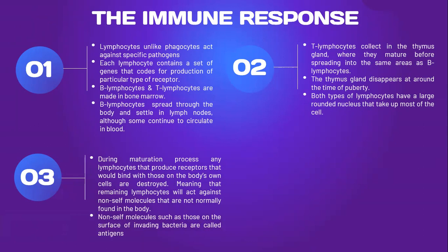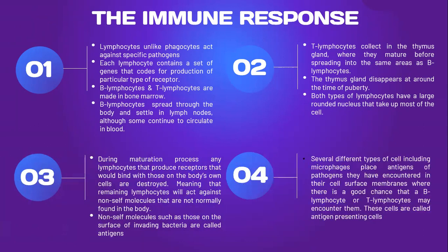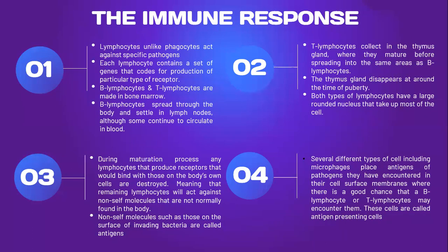The remaining lymphocytes will act against foreign molecules that are not normally found in the body. Foreign molecules, such as those on the surface of invading bacteria, are called antigens. Several different types of cells, including macrophages, place antigens of pathogens they have encountered in their cell surface membranes, where there is a good chance that B-lymphocytes and T-lymphocytes may encounter them. These cells are called antigen-presenting cells.